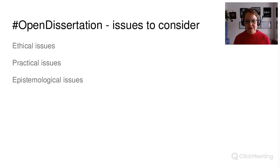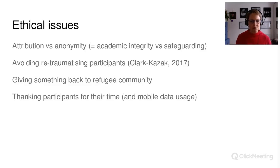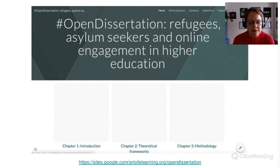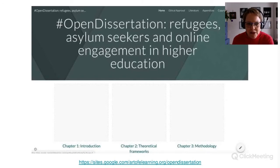What I want to discuss here is the aspects around doing this dissertation openly, and I've divided them into three areas: ethical issues, practical issues, and epistemological issues. I've created a Google site, which I'm calling OpenDissertation — Refugees, Asylum Seekers and Online Engagement in Higher Education. As you can see from this slide, it exists but there's not much in it yet; it's kind of an empty framework at this stage. My plan is to add chapter by chapter as I go along in draft form to this site.